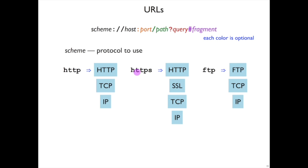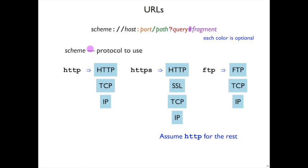You'll often see, especially on the modern web, HTTPS. That is HTTP sitting on top of SSL, the secure sockets layer — the cryptographic primitives that can host things like HTTP. SSL itself sits on top of TCP and IP in the HTTPS stack. Or it could be FTP, an older protocol for transferring files, which again sits on top of TCP and IP. We'll just assume HTTP for the rest, because some interpretation here can be dependent on the protocol.